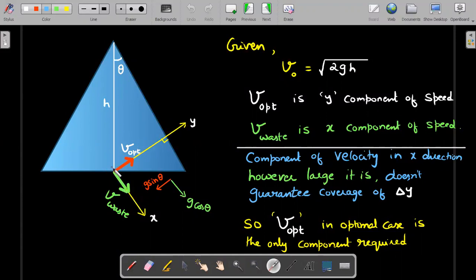Now think of all your throws in different directions. I can easily take components of those throws: one along this y-axis, which is the perpendicular direction, and one along the x-axis, which is parallel to the slant height. I'm calling them V_opt (optimum) and V_waste. Instead of calling them Vx and Vy, I'm using these names to put my point across.